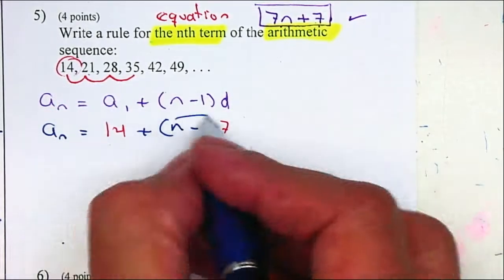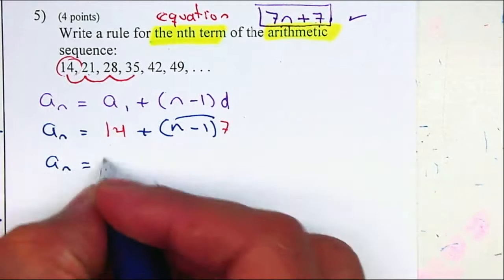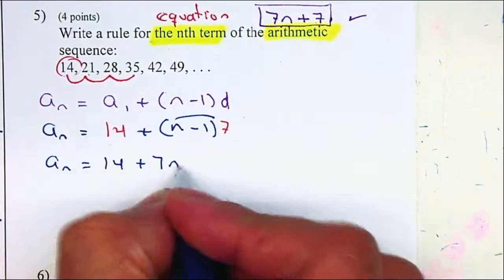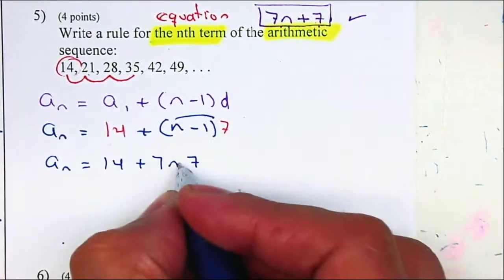Negative 1 times 7 is negative 7. Combine my like terms.